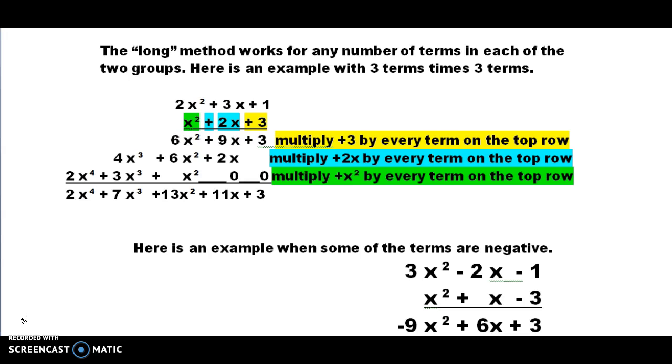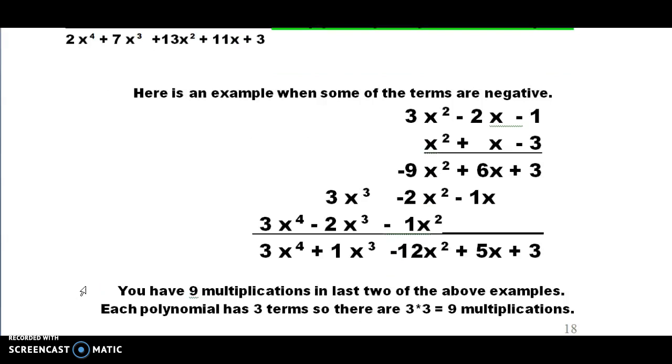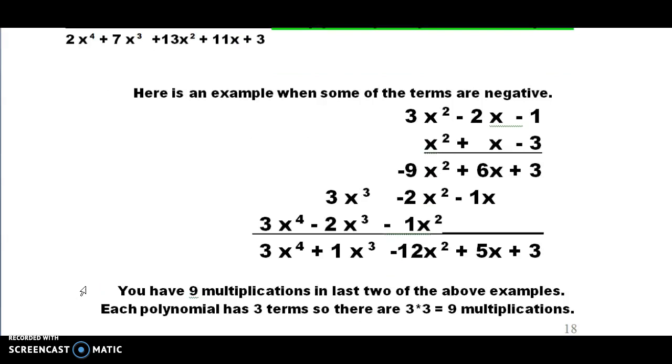As you can see all the terms are positive terms, so what I'd like to do is work an example for you where some of the terms are positive and some are negative. Again you can see here on the top row we have three terms and on the second row we have three terms.